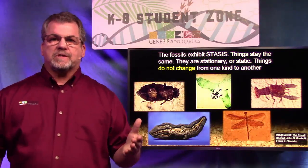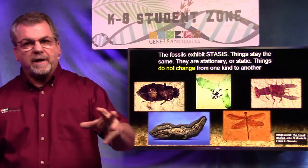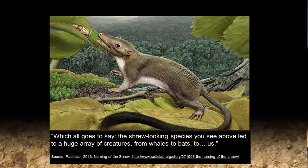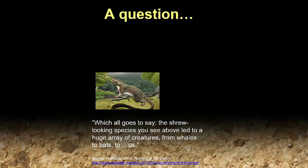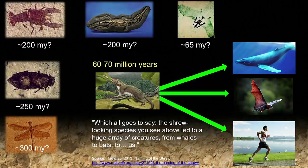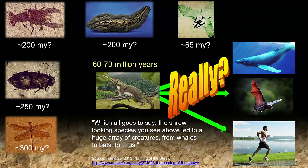The fossil record shows stasis — we don't see animals changing from one kind to another. Scientists have discovered living fossils for virtually every type of living thing. According to Lawrence Berkeley, this creature is your great-great-great-grandpa, and in over 60 to 70 million years, evolved into whales and bats and people. So here's my question: if that is true, then why do we see animals that are supposed to be hundreds of millions of years old showing no change? Yeah, it's a big problem for evolutionists.